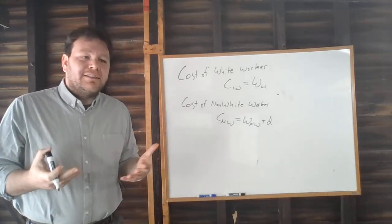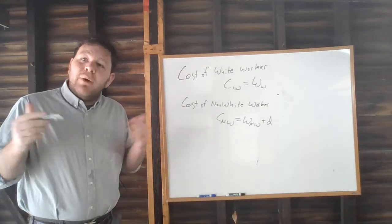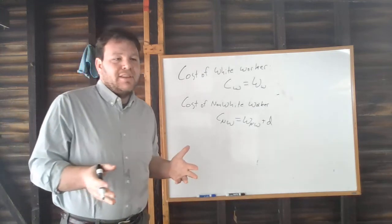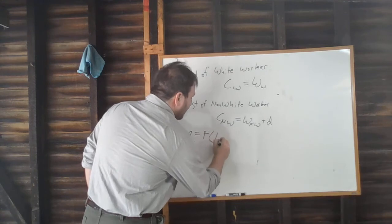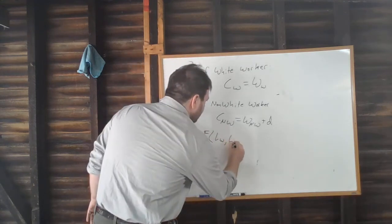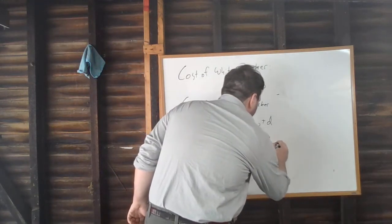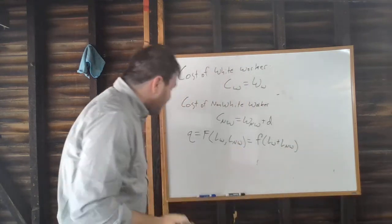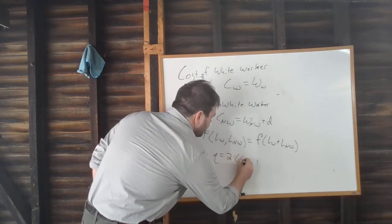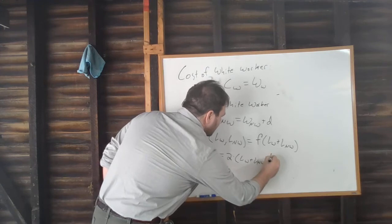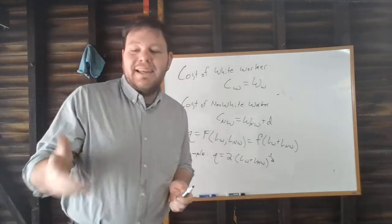On top of this, let's imagine a context in which, other than the fact that non-white workers are discriminated against, there are no differences whatsoever between white and non-white workers. White and non-white workers are perfect substitutes with exactly the same level of productivity. The firm's production is given by Q = F(LW, LNW), which is some function of these two added together — for example, Q = 2(LW + LNW)^(1/2). From the point of view of production, a white worker factors in exactly the same way as a non-white worker.